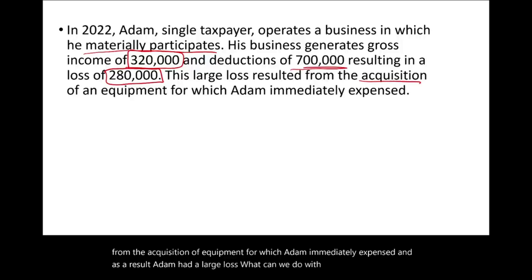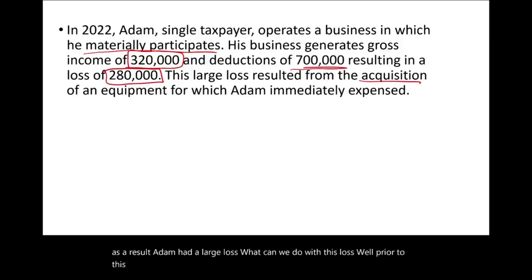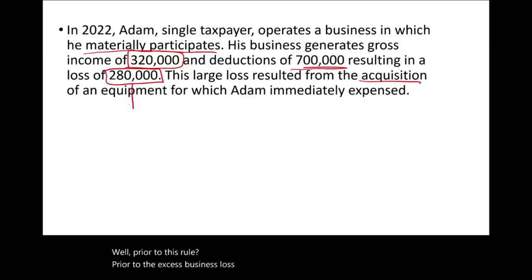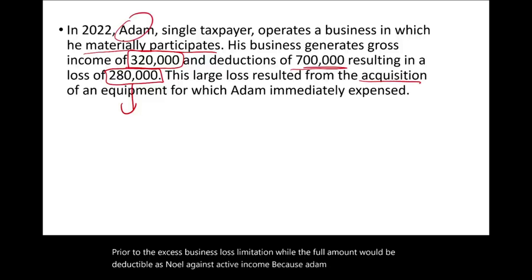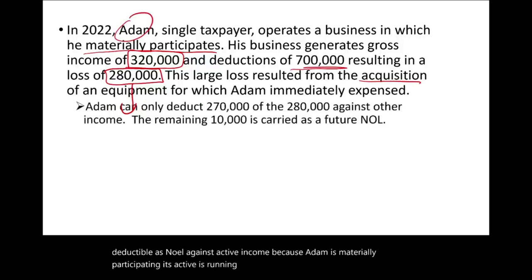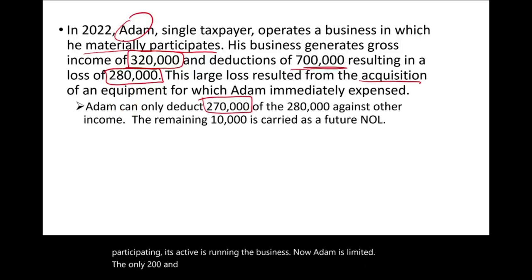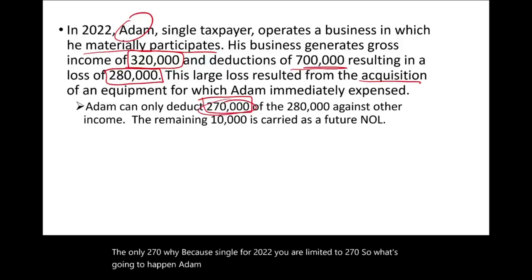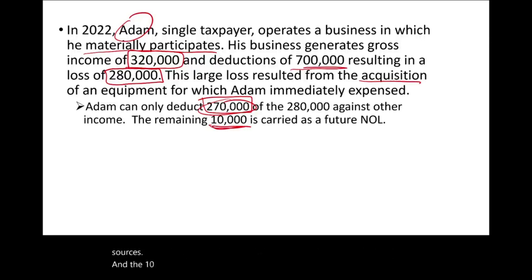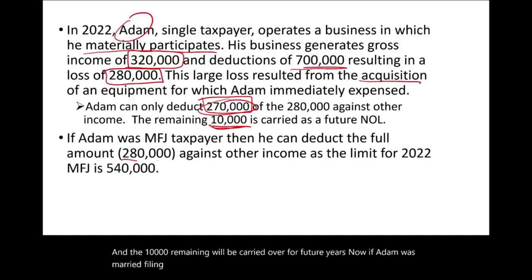What can we do with this loss? Prior to the excess business loss limitation, the full amount would be deductible as NOL against active income because Adam is materially participating — he's running the business. Now, Adam is limited to only $270,000, because for a single taxpayer in 2022 you are limited to $270,000. Adam can deduct $270,000, assuming he has income from other sources, and the $10,000 remaining will be carried over for a future year. If Adam was married filing jointly, he could deduct the full amount because the limit for 2022 is $540,000.